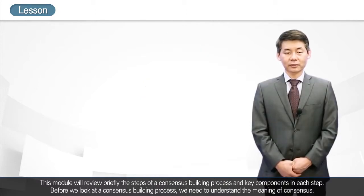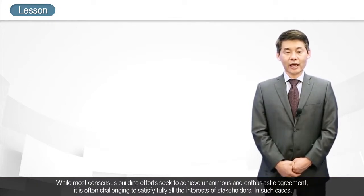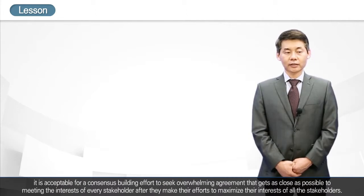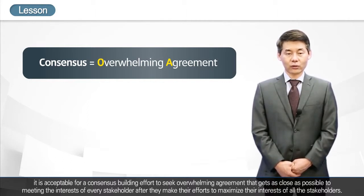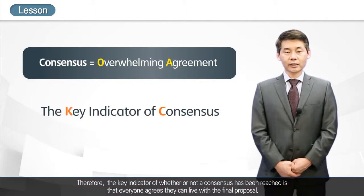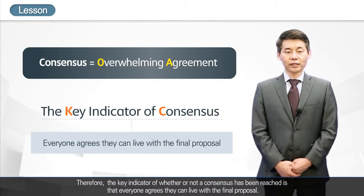Before we look at a consensus-building process, we need to understand the meaning of consensus. While most consensus-building efforts seek to achieve unanimous and enthusiastic agreement, it is often challenging to satisfy fully all the interests of stakeholders. In such cases, it is acceptable for a consensus-building effort to seek overwhelming agreement that gets as close as possible to meeting the interests of every stakeholder. The key indicator of whether or not a consensus has been reached is that everyone agrees they can live with the final proposal.